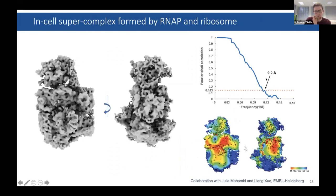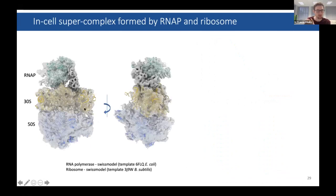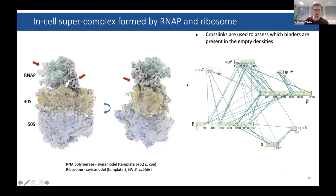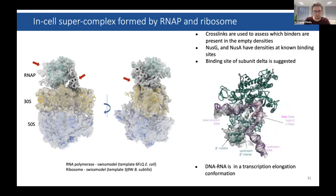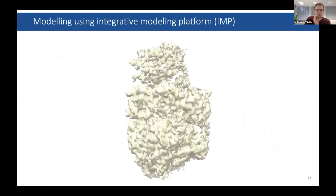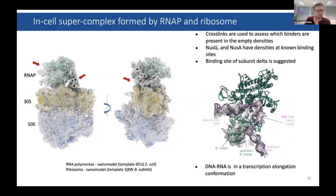The overall density was about 9 Ångströms. You could fit a model of the ribosome and RNA polymerase, but there were additional unfilled densities. We went back to our cross-linking dataset to see where proteins are binding on the RNA polymerase and whether they represented these densities. For instance, SigA binds at its canonical binding site but doesn't fit the density — it mostly sticks out — so we could exclude SigA. The quality of the density with the RNA going through confirmed this was an elongating RNA polymerase.